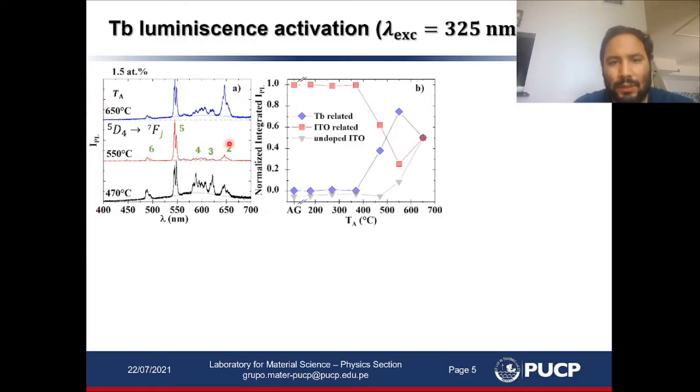Concerning the integrated emission intensity, we see that the emission intensity associated to terbium increases with annealing temperature till certain temperature and then it decreases again. A similar behavior is observed for the host-related emission of the same sample. We believe that this variation is associated to an effective competition between the recombination and subsequent energy transfer to host-related states and terbium states.